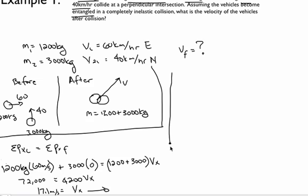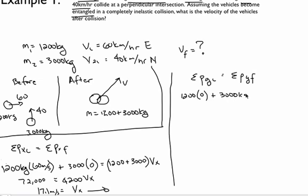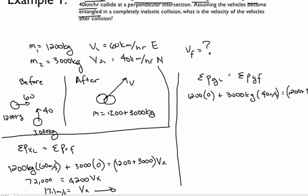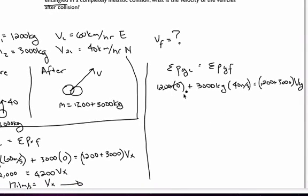Now we sum the momentums in the y-direction: initial must equal final. The 1,200 kilogram car only moves eastward so its y-velocity is zero, plus the 3,000 kilogram truck moving at 40 meters per second northward, must equal the combined mass 1,200 plus 3,000 times Vy. That zero term drops out and we get 120,000 = 4,200 Vy, so the final velocity in the y-direction is 28.6 meters per second.